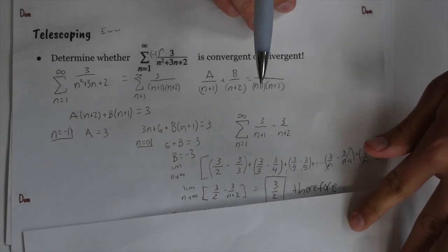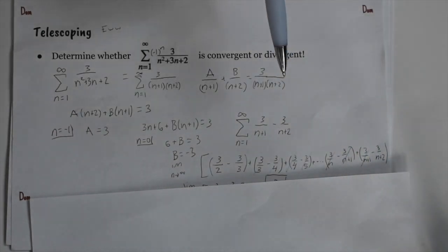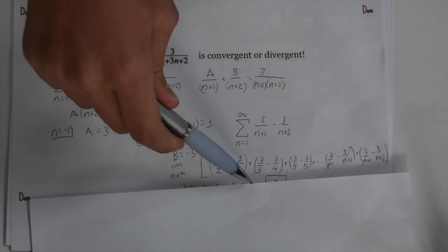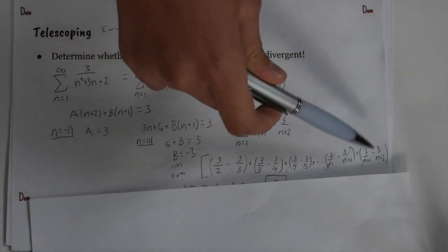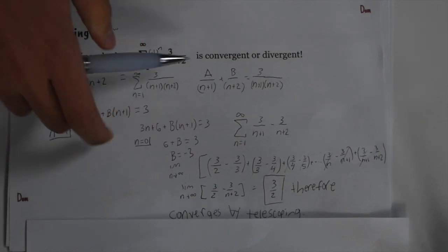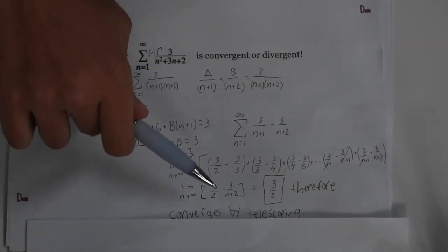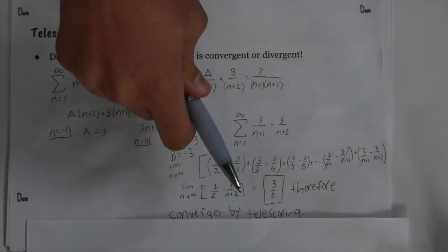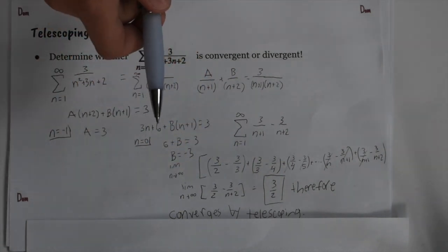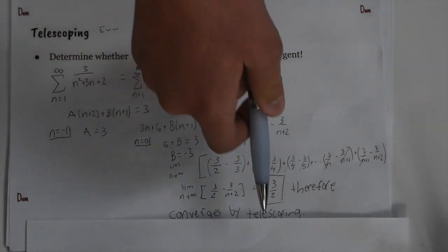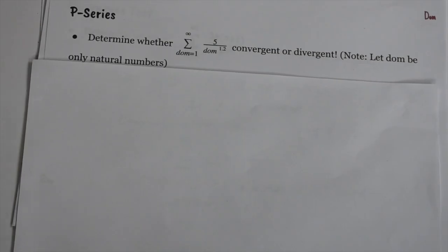We write out all the terms and we can see all the middle terms cancel, so we're left with the two terms on the ends. Because we're taking the limit, the 3/(n+2) goes to zero and we're left with 3/2. Because it converges to a number and not infinity, we know it converges by telescoping.